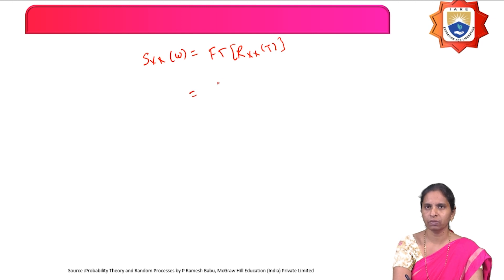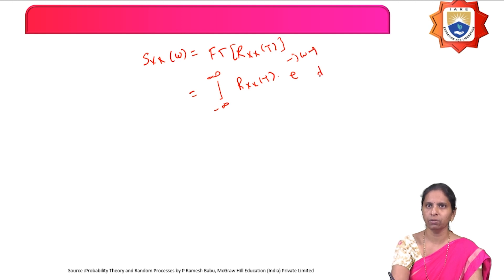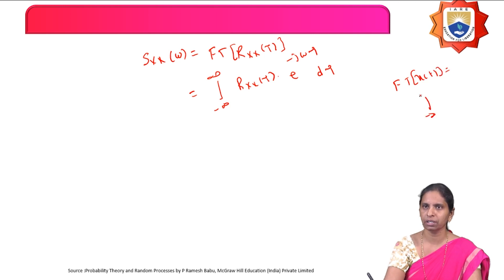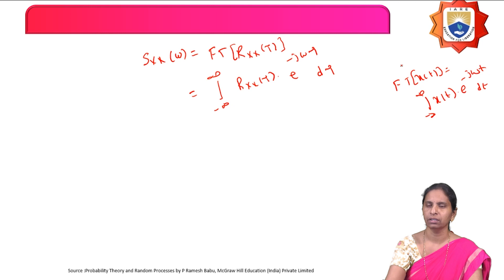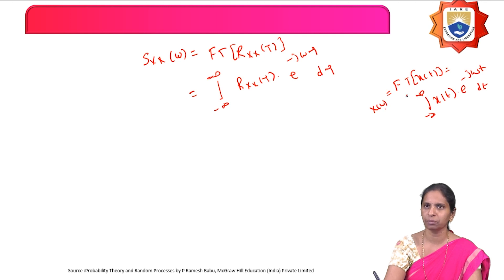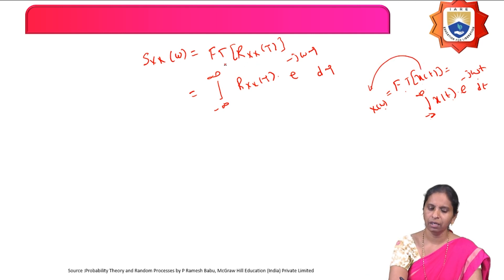The Fourier transform formula is: integration from −∞ to ∞ of Rx(τ)·e^(−jωτ) dτ. Recall that the Fourier transform converts from time domain to frequency domain: X(ω) = ∫ x(t)·e^(−jωt) dt. Similarly, the Fourier transform of the autocorrelation function gives the power density spectrum.